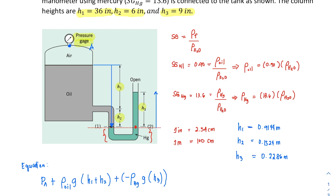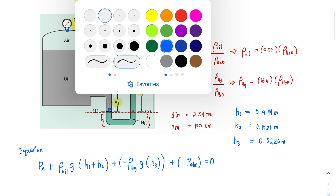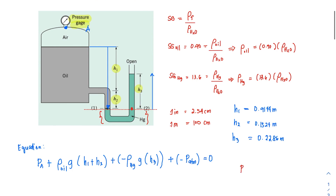Going further up, we reach atmospheric pressure p_atm. However, since we are measuring gauge pressure — which is the excess pressure above atmospheric — we set p_atm equal to zero. So that term drops out of the equation entirely.